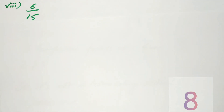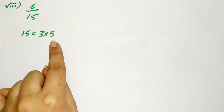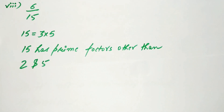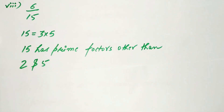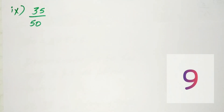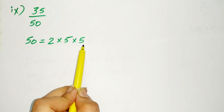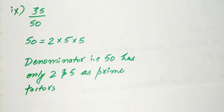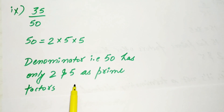The eighth part is 6 divided by 15. 15 can be expressed as 3 multiplied by 5, and 15 has prime factors other than 2 and 5, that is 3, so it's not a terminating decimal expansion. The ninth part is 35 divided by 50. We know 50 equals 2 multiplied by 5 multiplied by 5, so denominator 50 has only 2 and 5 as prime factors — it's a terminating decimal expansion.